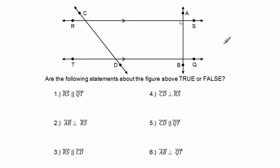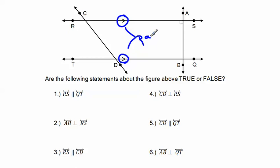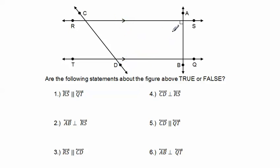Let's jump into the problems. I have a figure with two lines crossing horizontally, one going diagonally, and one going up and down. Important to note: if two lines each have an arrow in the middle, that means those lines are parallel to each other — same slope, never going to touch. I also have two lines in this figure crossing at a 90-degree angle, which we'll need to know shortly.